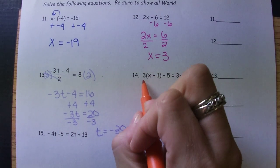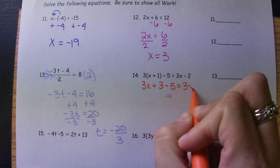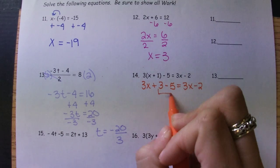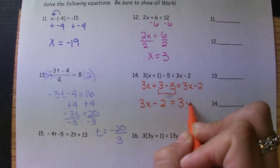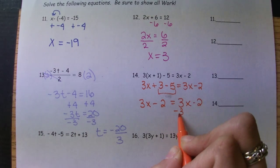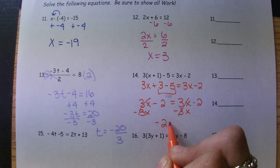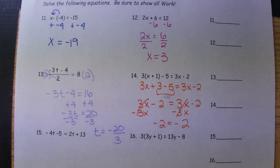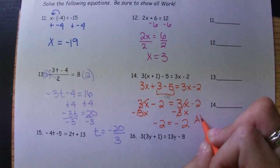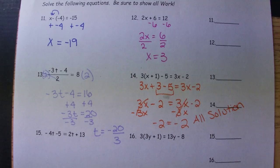Number 14, we're going to distribute first. We can combine like terms. We have variables on opposite sides. Those three X's both cancel out. Those both become zero. And that is a true statement. When we get a true statement, it's all solutions or all real numbers. If it's a false statement, we'd say no solution.